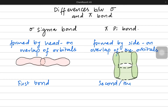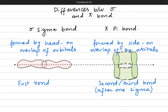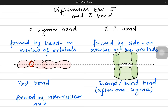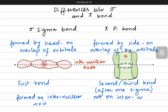Sigma bond is always the first bond — it is the first priority — and pi bonds are formed when the same atoms want to make a second or third bond. The second and third bonds are always pi bonds. Sigma bonds are formed on the internuclear axis — right along the dotted line where both nuclei are present. Pi bonds are not on the internuclear axis; they exist in the region above and below it, away from the nuclei of the bonding atoms.